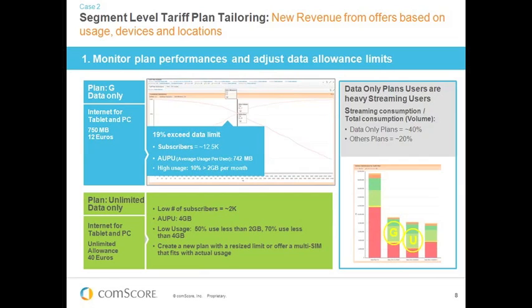Plan G has a 750 megabyte monthly limit and costs around 12 euros a month. Looking at the cumulative distribution of data use across all subscribers on this plan, we can see that about 19% of subscribers are actually exceeding that data limit monthly. The average use per user is relatively low, but we also have some very high-intensity users — about 10% using more than two gigabytes a month. From a carrier perspective, we clearly have leaking revenue: a significant proportion of subscribers are on the wrong plan.